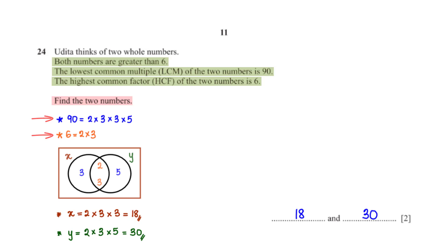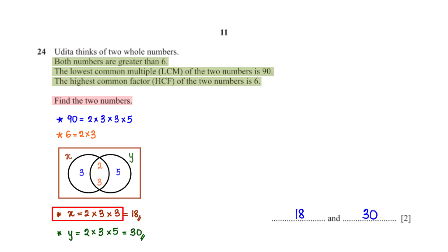The prime factors of the HCF (6 = 2 × 3) go in the intersection of the Venn diagram. From the prime factors of 90, removing 2 and 3 leaves 3 and 5. For both numbers to be greater than 6, we place 3 in one set and 5 in the other. So x = 2 × 3 × 3 = 18 and y = 2 × 3 × 5 = 30. The two numbers are 18 and 30.